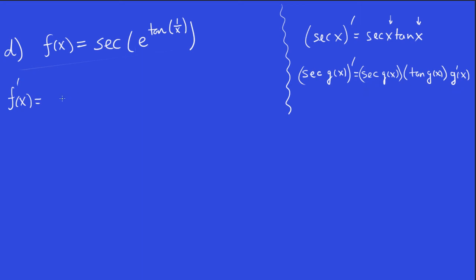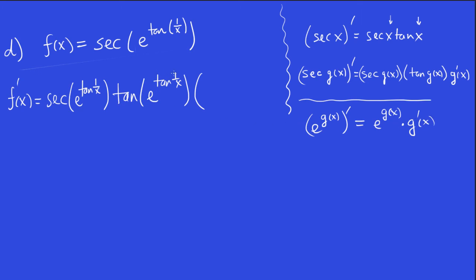So secant of this function. I won't write brackets. It doesn't matter. Times tan of that. And now we've got to multiply by the derivative of e to the tan 1 over x, right? Well, we know that if we take, we know the derivative of e to the x is e to the x. So the derivative of e to anything, let's say g of x, is going to be e to that times the derivative of that, right?